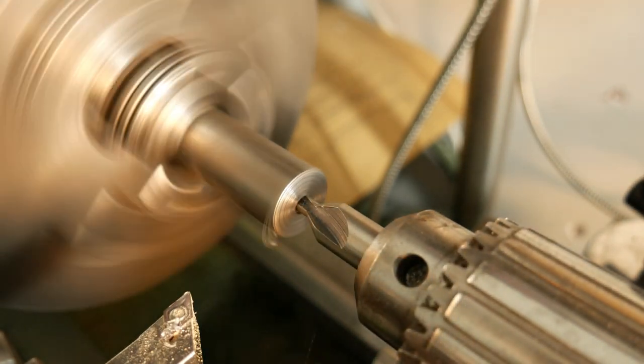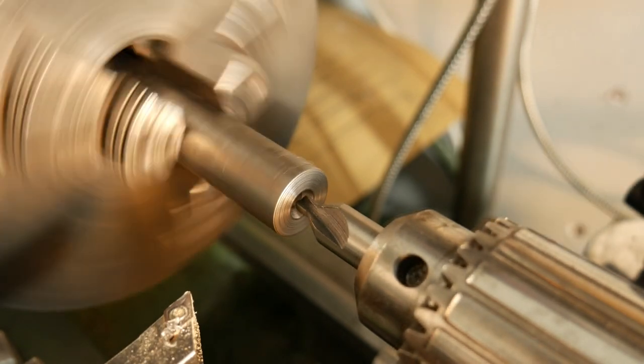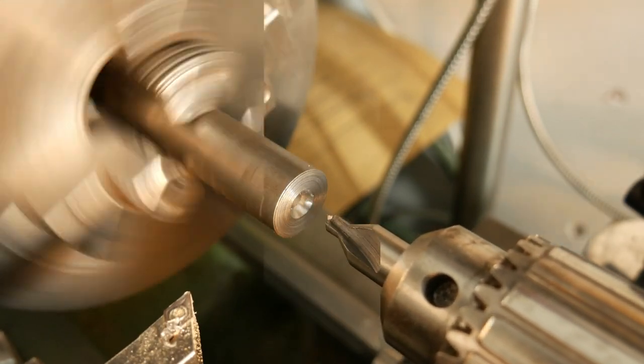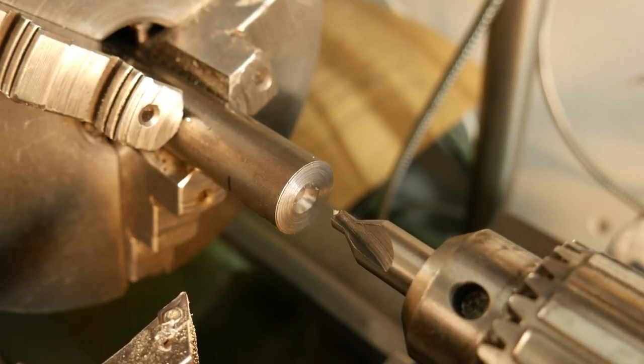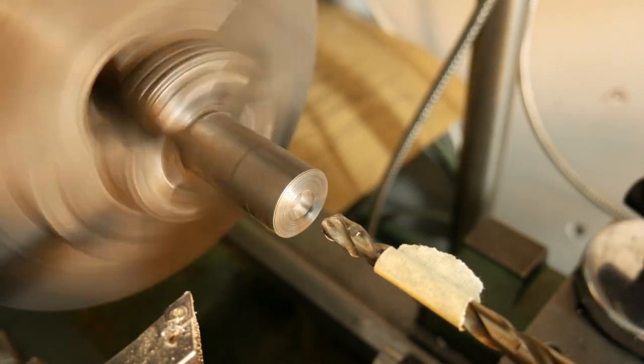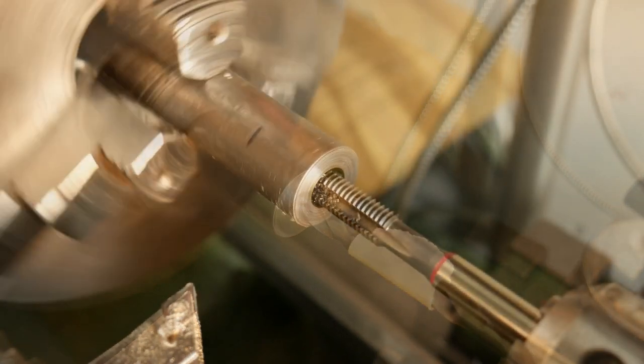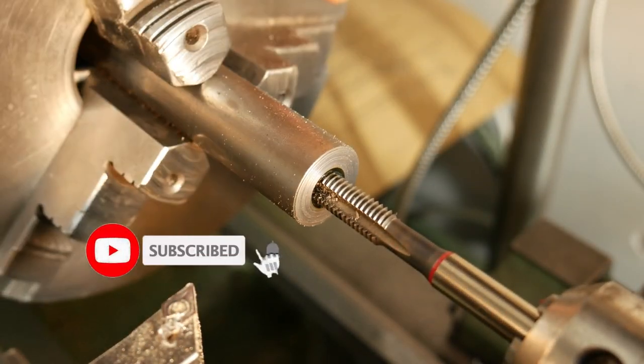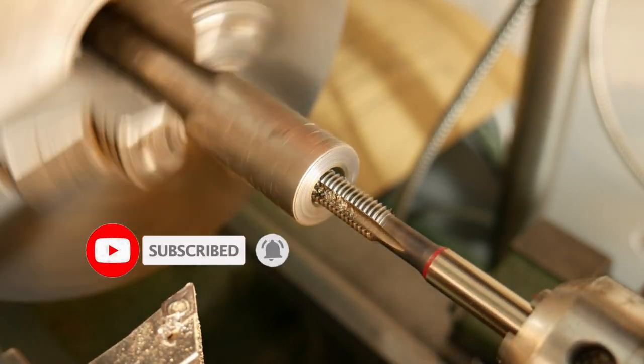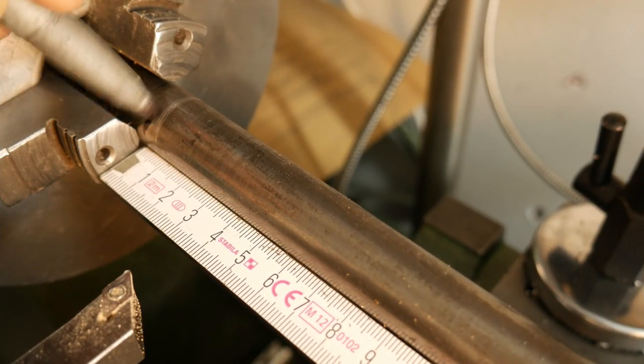As you can see, the surface where I will put the tailstock is very big. I use the correct drill to make the M8 screw. After finishing the tapping hole, I put out the round bar from the chuck.